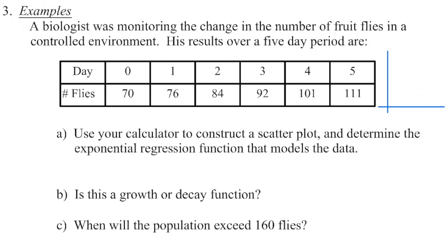The first thing you always want to do in an example is identify what are the two things we're comparing. Even before you look at a table of values, read the question and ask yourself what are the two things we're comparing — sometimes the units give you a clue. In this case, we're looking at days, a unit of time, and comparing that to the number of fruit flies. Then ask yourself which is the independent variable and which is the dependent variable, remembering that independent does not necessarily come first. The number of flies depends on the day we're on, so the day is the independent variable.